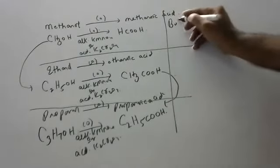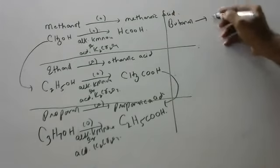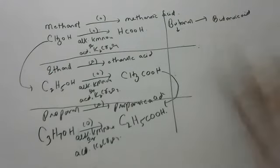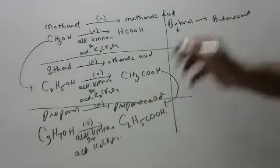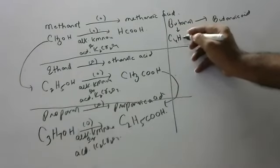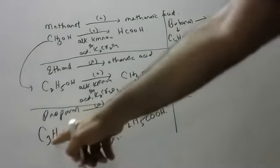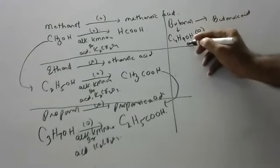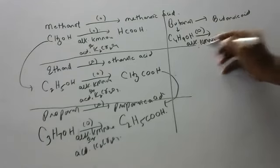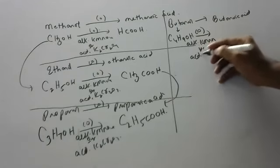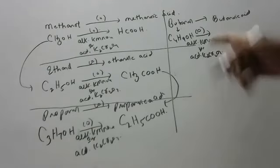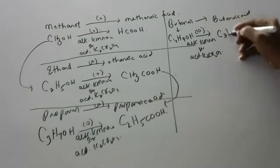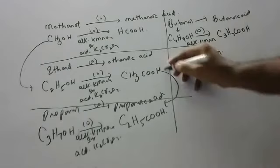Next — butanol. Butanol on oxidation gives butanoic acid. What is the formula of butanol? C4H9OH. To get the next compound, add CH2. C4H9OH in the presence of alkaline KMnO4 or acidified K2Cr2O7 gives butanoic acid. The formula of butanoic acid is C3H7COOH.